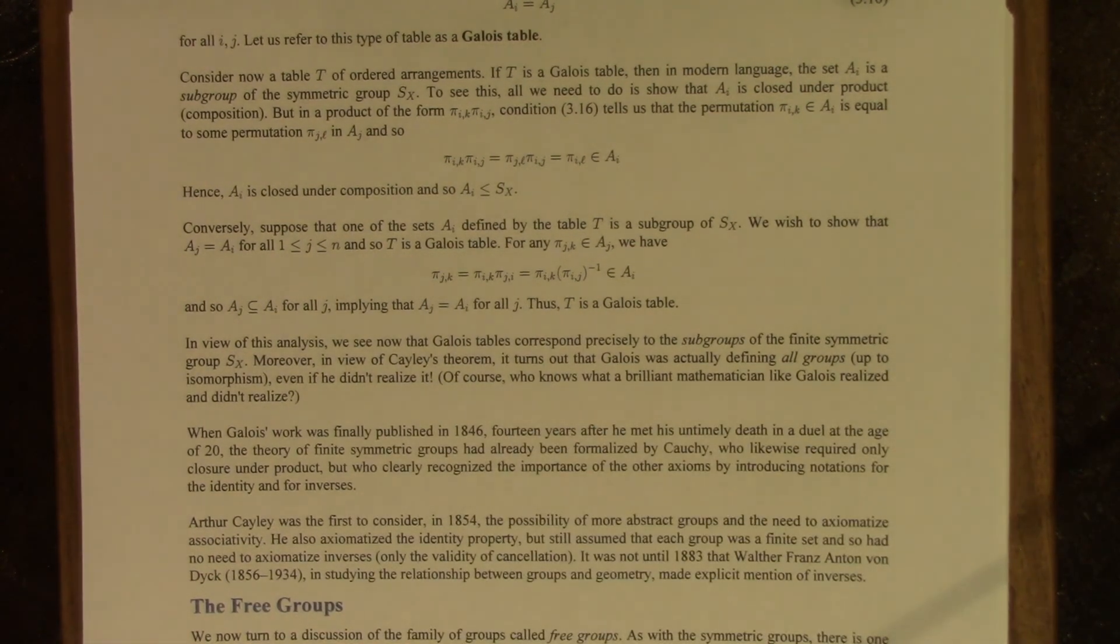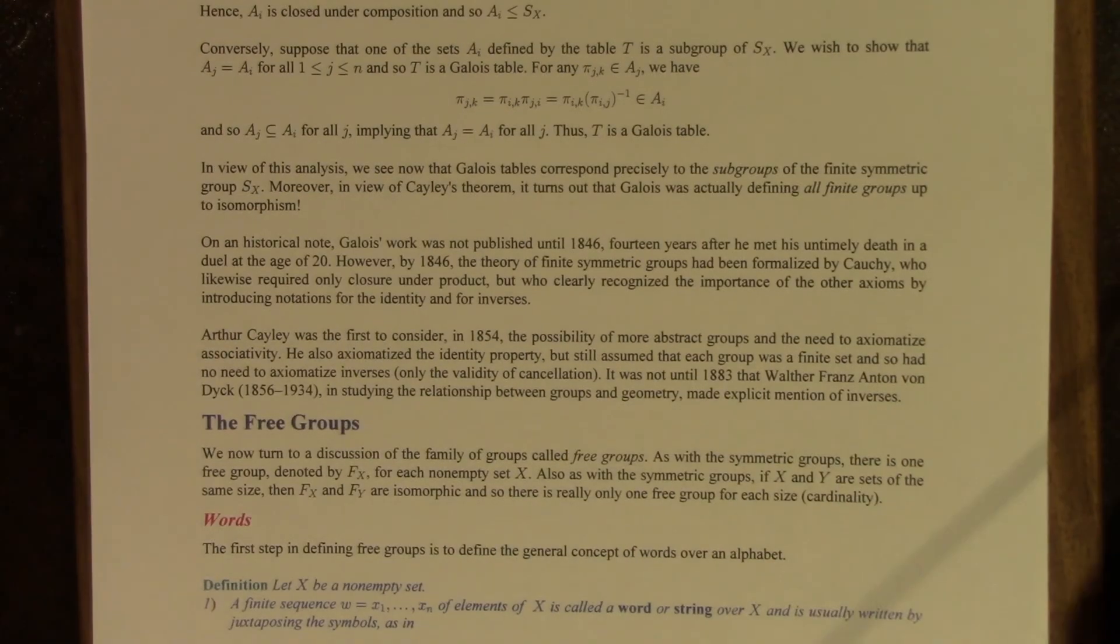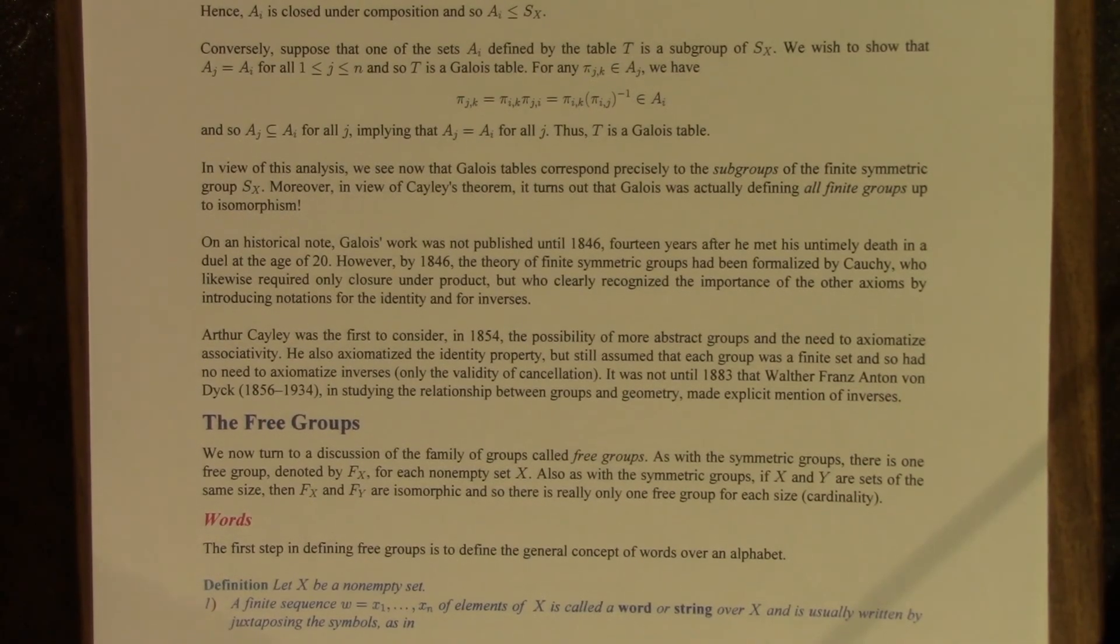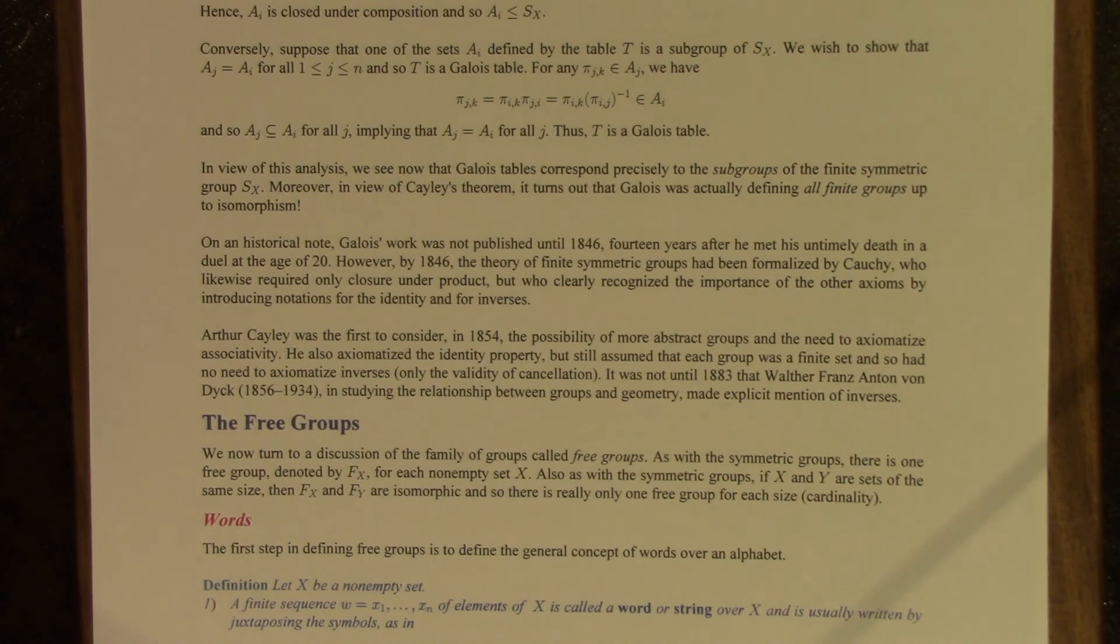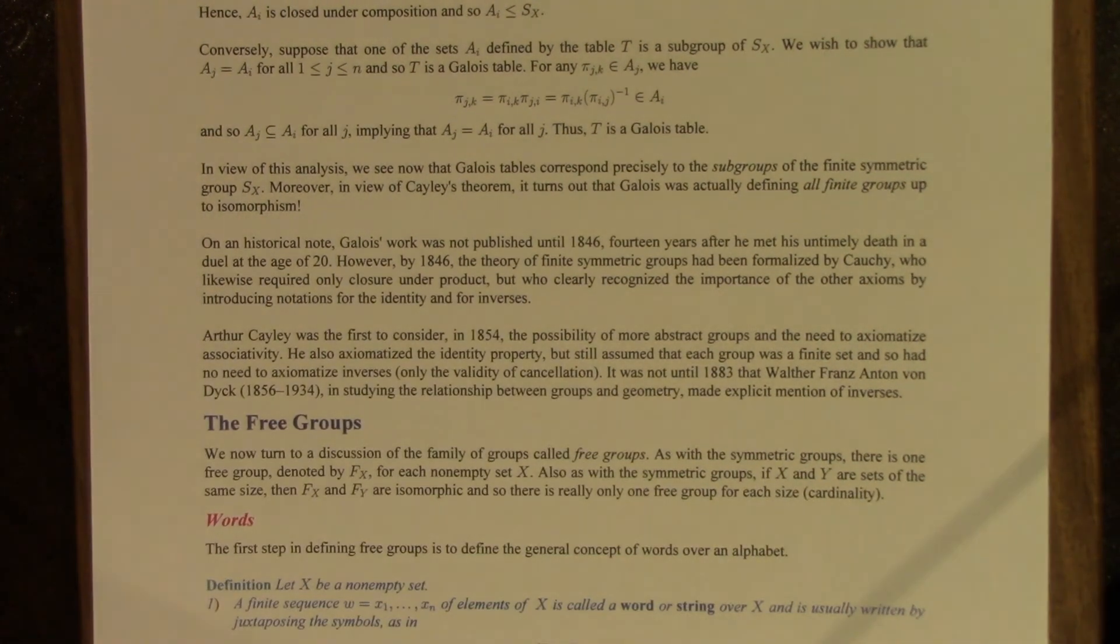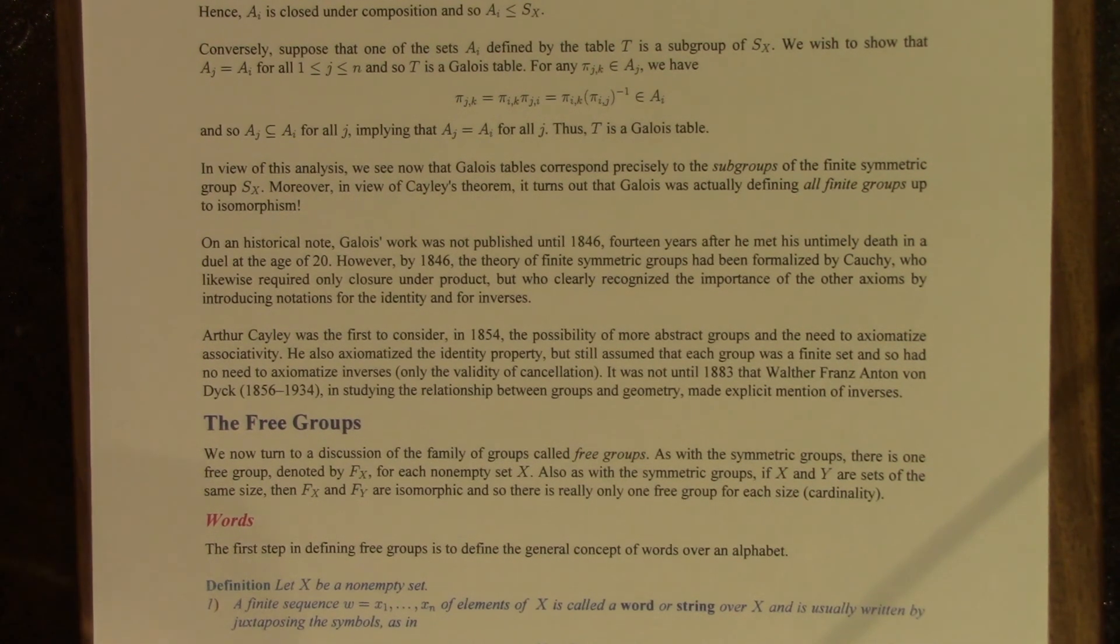So T is a Galois table. So in view of this analysis we can now see that Galois tables correspond precisely to the subgroups of the finite symmetric groups on finite sets X. Moreover, in view of Cayley's theorem which was in 1854 after Galois' work, turns out that Galois was actually working with all finite groups up to isomorphism.